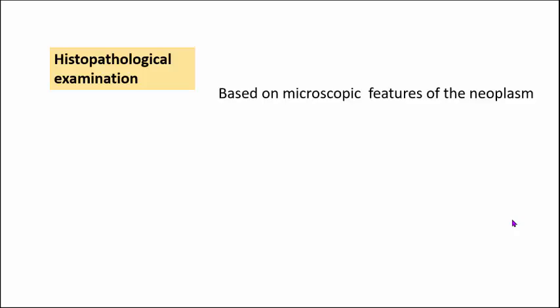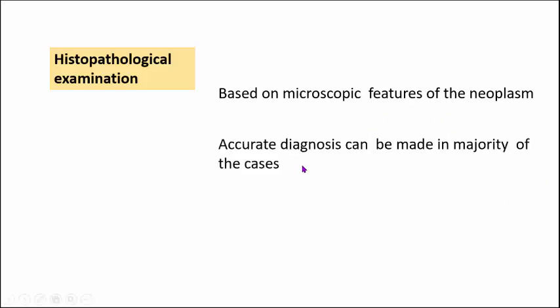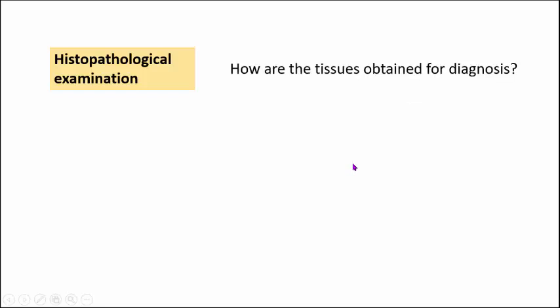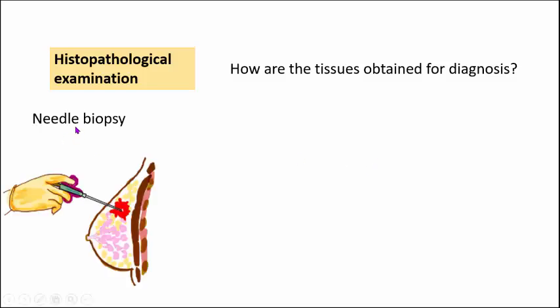The next important method is histopathological examination, where the diagnosis is based on microscopic features of the neoplasm, allowing accurate diagnosis in the majority of cases. Various methods are used to obtain tissue. One is needle biopsy — in contrast to fine needle aspiration, this uses a core needle biopsy needle. Using the breast cancer example, you take a small chunk of tissue by means of a core needle. This is called core needle biopsy.